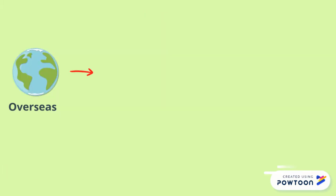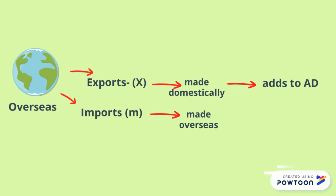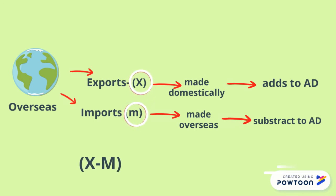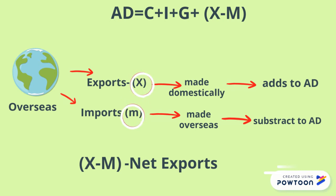The overseas sector includes export and import spending. Since AD is spending on goods and services domestically, exports which are made domestically always add to AD, while import spending on goods and services which are made overseas subtracts from AD. The short form for exports is X, while for imports it's M. When we subtract exports minus imports, it is known as net exports. Adding overseas spending, our full equation will be AD equals C plus I plus G plus X minus M.